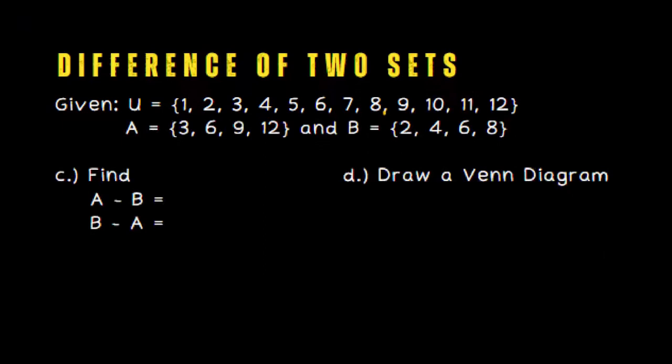Let's use the same example from last time. This time, we'll find A minus B and B minus A. Let us try to list down the elements of A minus B. My suggestion is, first, draw a Venn diagram.